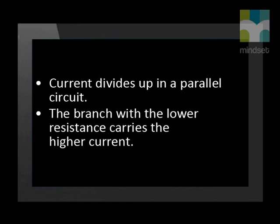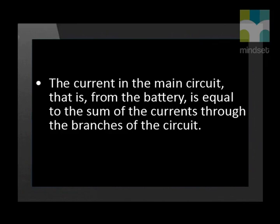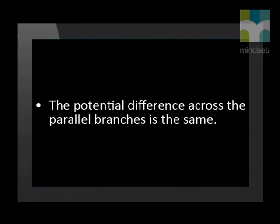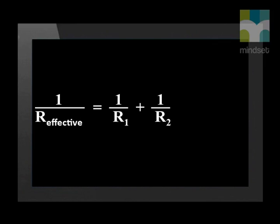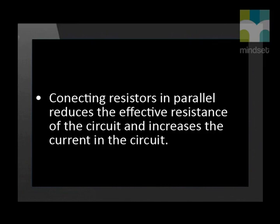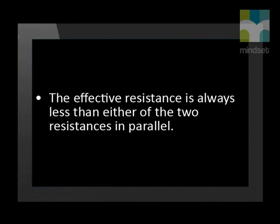Before we wrap up, let's summarize what we know about parallel circuits. Current divides up in a parallel circuit. The branch with the lower resistance carries the higher current. The current in the main circuit is equal to the sum of the currents through the branches. The potential difference across the parallel branches is the same. We calculate the effective resistance using 1 over R effective equals 1 over R1 plus 1 over R2. Connecting resistors in parallel reduces the effective resistance and increases the current. And lastly, the effective resistance is always less than either of the two resistances in parallel. In our next lesson, we will do more examples to calculate the resistance of parallel resistors and show you a different equation you can also use.